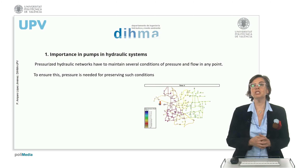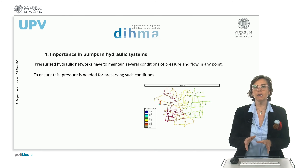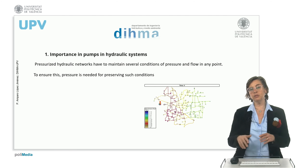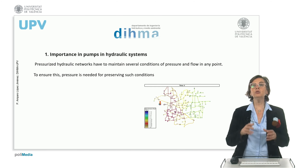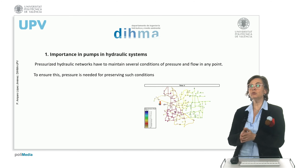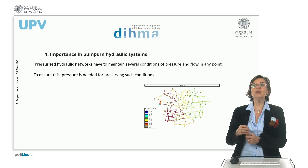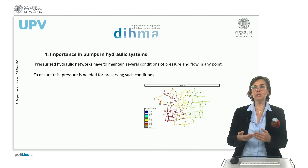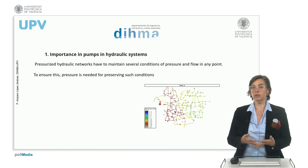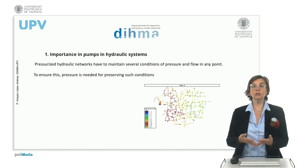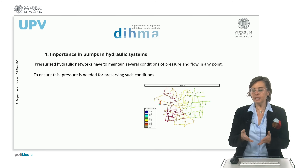So why do we need pumps in pressurized systems? We need pumps because pressurized systems are networks of pipes, valves, and reservoirs connected together to bring water from a source point to consumption points in different parts. We need to supply energy to the system — flow and pressure — by transforming energy coming from a motor into hydraulic energy of flow and pressure. These machines are needed to preserve those conditions.